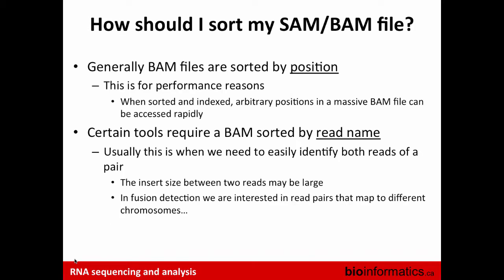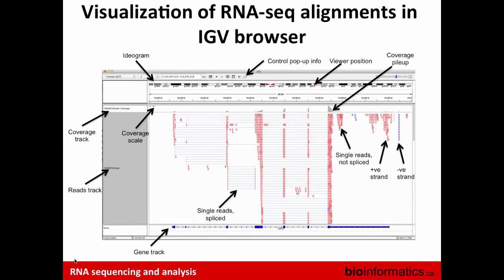After generating the BAM file, you'll probably need to sort it if the tool doesn't do it automatically. There are two ways to sort: by position or by read name. Sorting by position makes accessing reads within the BAM file faster for downstream tools. Sorting by read name maintains the read 1/read 2 association — if you sort by position you might lose the order of read one and read two, which some tools require.